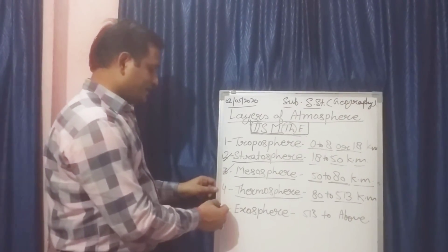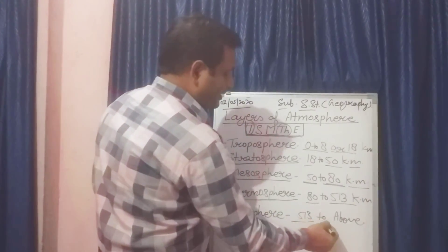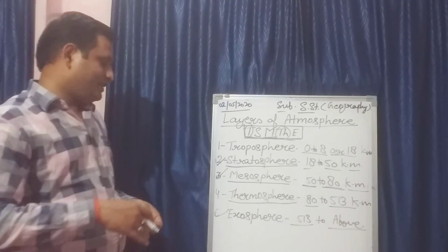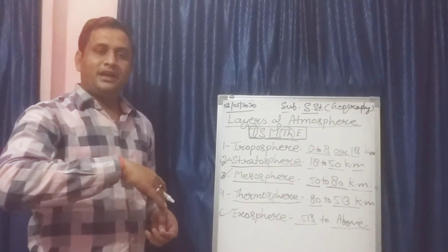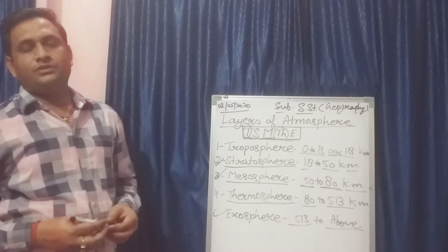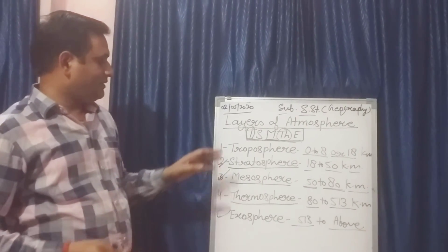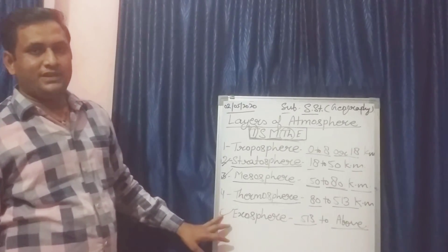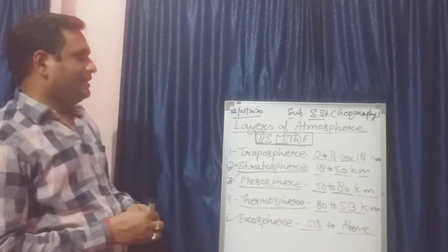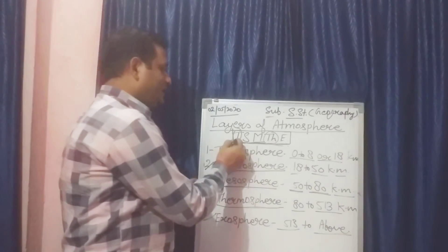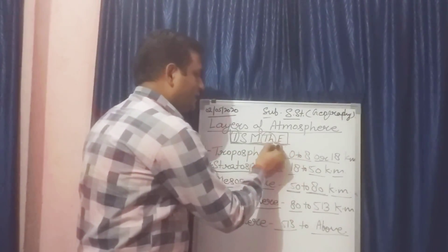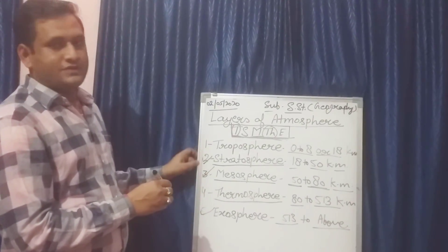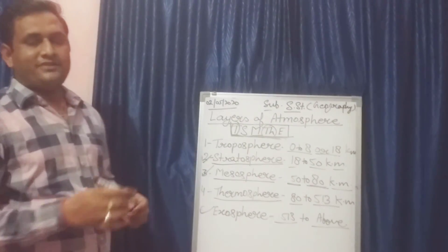And this is E — Exosphere. It is above 513 kilometers and beyond. In the Exosphere, we are going into space. So these are the 5 important layers of the atmosphere, and the simple formula TSM THE helps you learn the sequence of these layers.